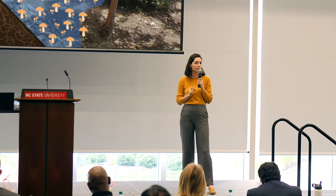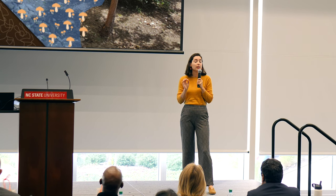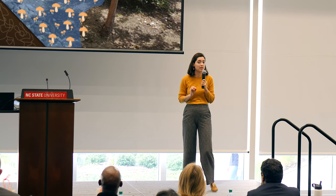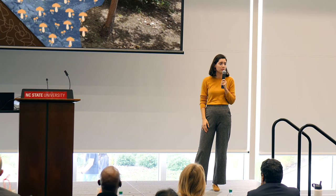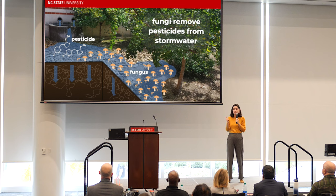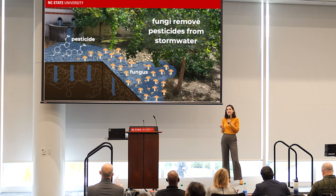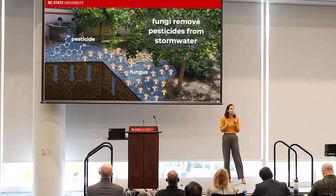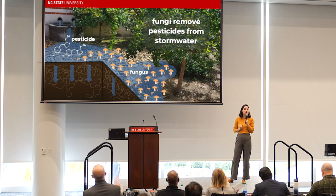Green stormwater infrastructure can remove some types of pollutants, especially those that associate with sediment that gets filtered out as the water drains. But water-loving pollutants like pesticides remain dissolved and just flush right through the system. We need to prevent flooding and keep the natural benefits of green stormwater infrastructure, but we also need to improve stormwater water quality.